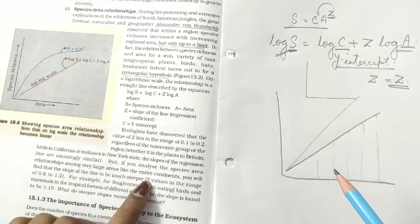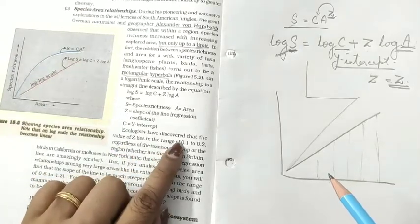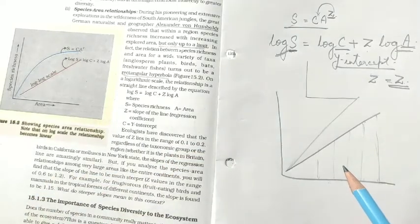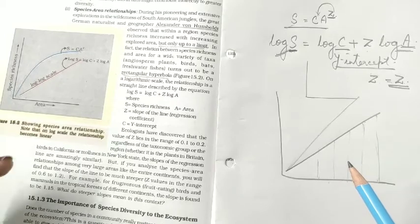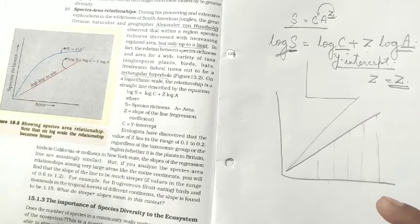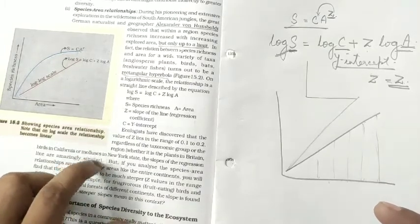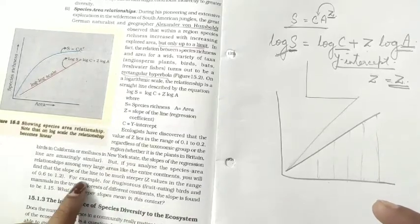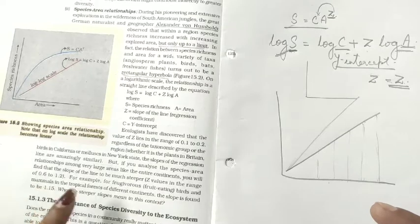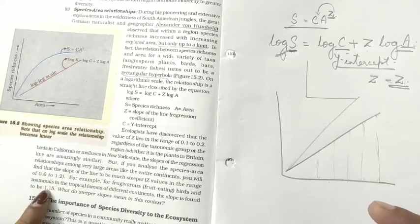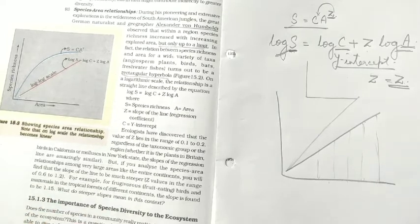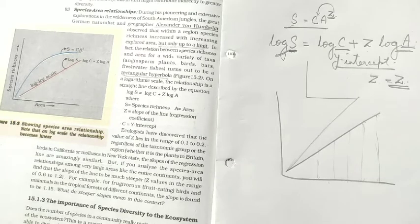The value of Z is 0.1 to 0.2 when the area explored is small, like a country — for example, California mollusks in Newark. When the species-area relationship was established for mollusk species in Newark, the Z value was in this range. For frugivorous fruit-eating birds and mammals in tropical forests on different continents, the slope is found to be 1.15. Steeper slope means richness increases more rapidly as area increases.